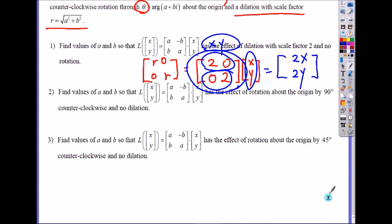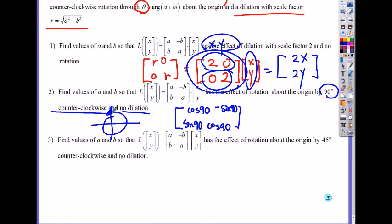What about 2? Find the value of a and b in this matrix. Has the effect of rotation about the origin, it should be always about the origin, 90 clockwise and no dilation. So if there is no dilation, r is equal to 1. And how did this look like? It was what? Cosine theta, which is 90. Cosine 90. Sine 90. Negative sine 90. So what is cosine 90? So unit circle here is 90. Cosine is x. So that is 0. Negative sine 90. Negative 1. 1. 0.